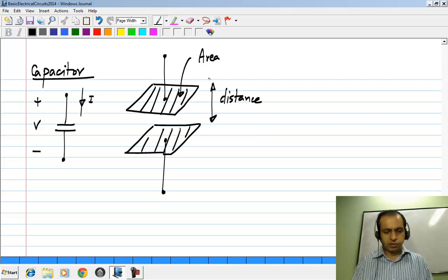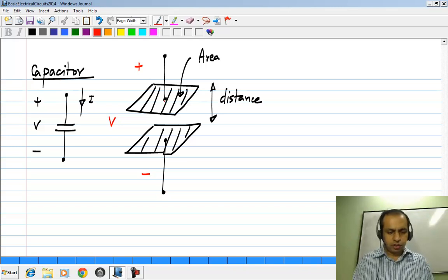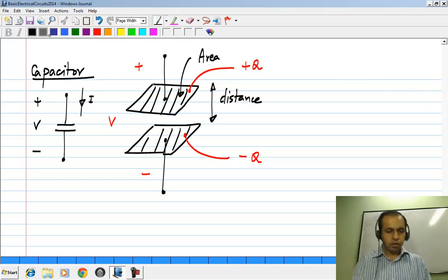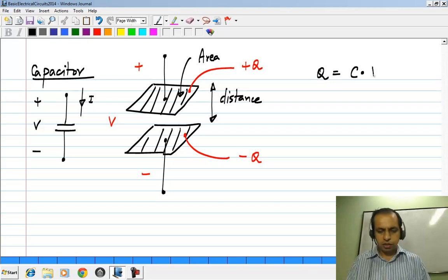And again from basic physics, you would know that if you apply a certain voltage V between the plates, that causes a charge plus Q on the plate which is connected to the positive of this voltage V, and minus Q which is connected to the negative of this voltage V. And the relationship between Q and V happens to be linear with a proportionality constant C, which is called the capacitance.